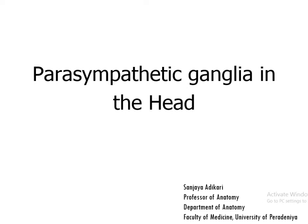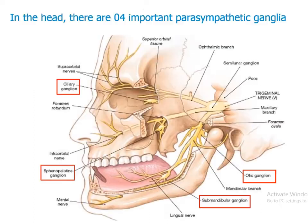The parasympathetic nervous system has a craniosacral outflow, and in the head there are four parasympathetic ganglia. The first ganglion is the ciliary ganglion.